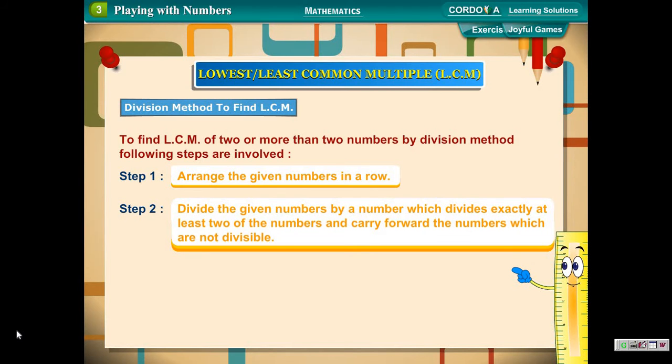Step 2: Divide the given numbers by a number which divides exactly at least two of the numbers and carry forward the numbers which are not divisible.